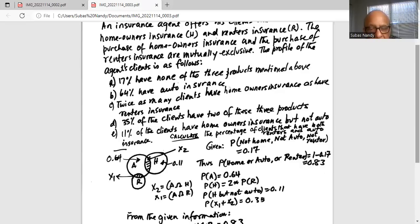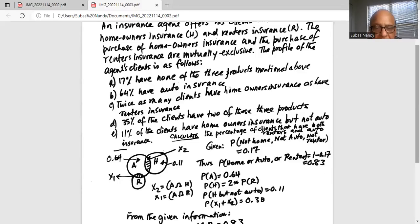Probability of A is 0.64. Probability of home is two times probability of renters. Probability of home but not auto is 0.11. And probability of two kinds of insurance, that is probability of X1 plus X2 is 0.35. These are given information.